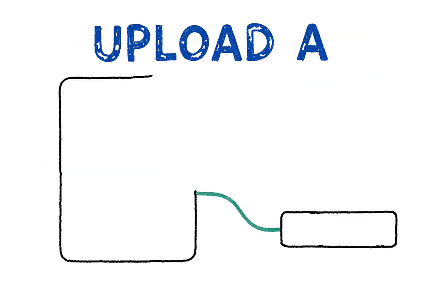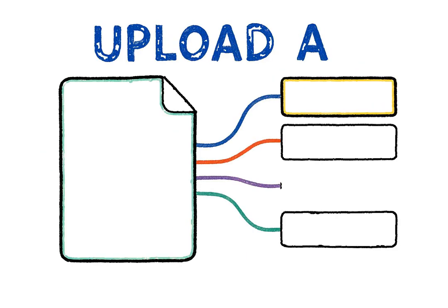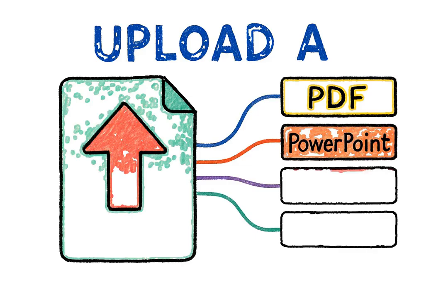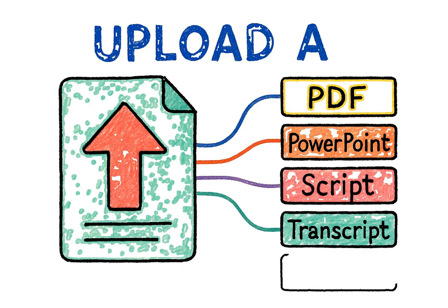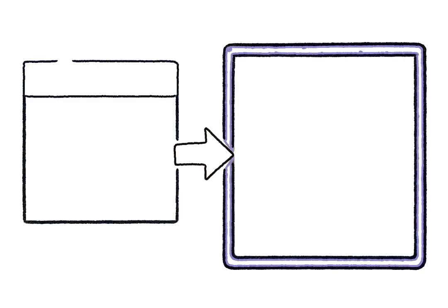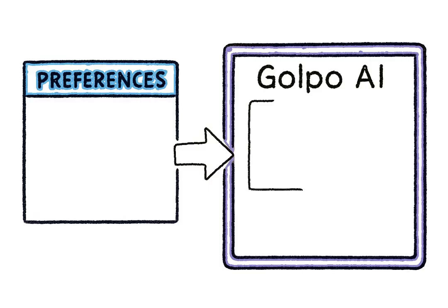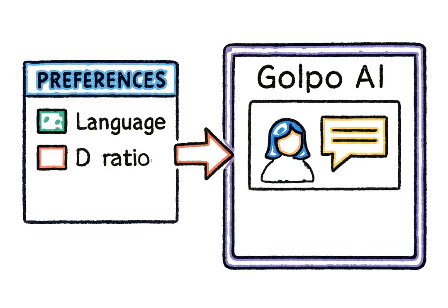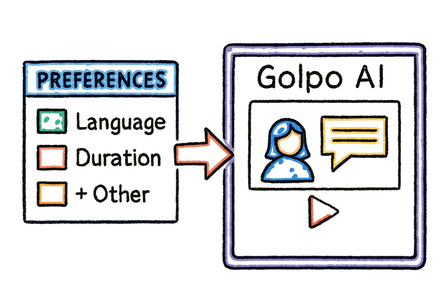All you need to do is upload a PDF, PowerPoint, script, transcript, or even a short prompt. After that, you can define the language, duration, and other preferences, and Golpo AI will generate a complete video that clearly communicates your message.